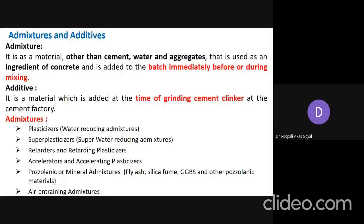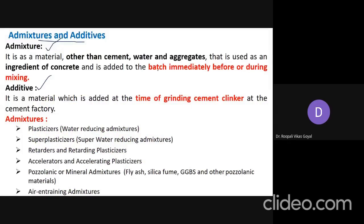We are starting with the second part of additives and admixtures. Before going into detail regarding pozzolanic admixtures, we should know the clear-cut difference between additives and admixtures. Admixtures are added at the time of batch mixing — just immediately before or during the mixing — while additives are added at the time of grinding clinker in the cement factory.